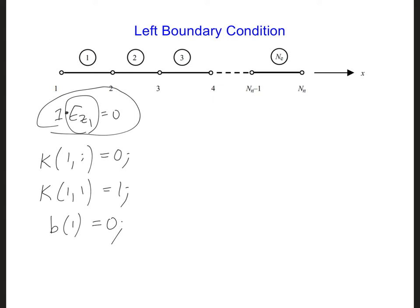But we're not quite done yet. The next thing we need to do is make sure that whenever ez1 shows up in any of the other equations in our global matrix equation, we make sure that we will also get a value of 0.